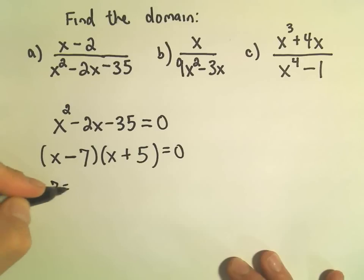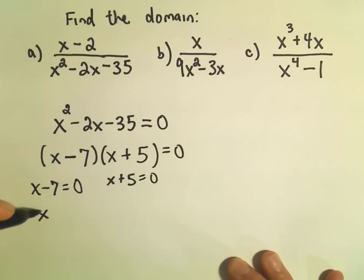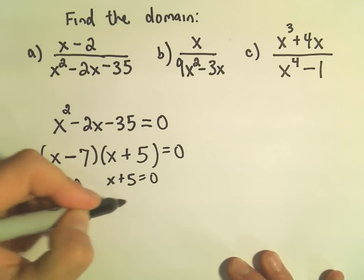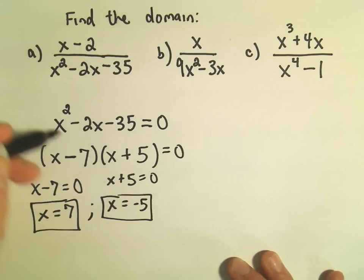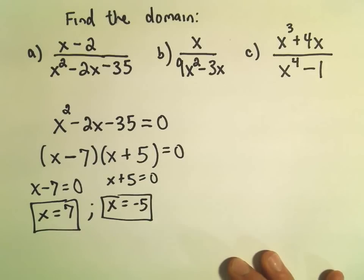And now we simply set each factor equal to zero and solve. So for the first part, if we add 7, we would get x equals 7, and if we subtract 5, we would get x equals negative 5. So those are the solutions to the equation x² - 2x - 35 equals 0.